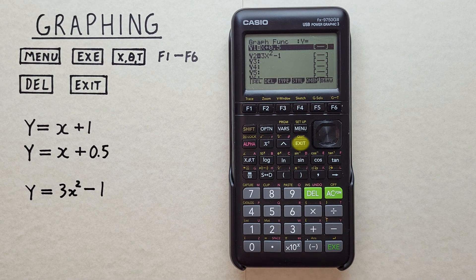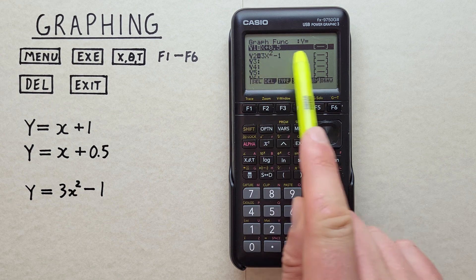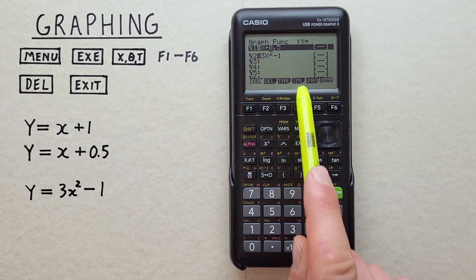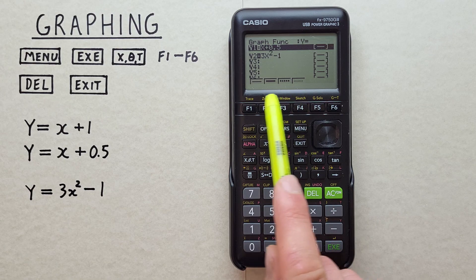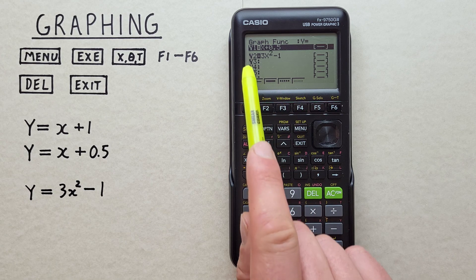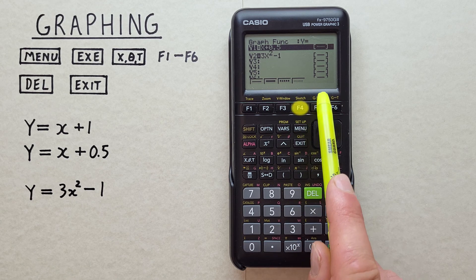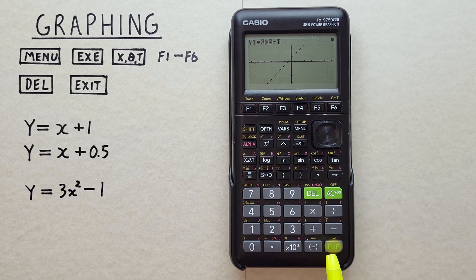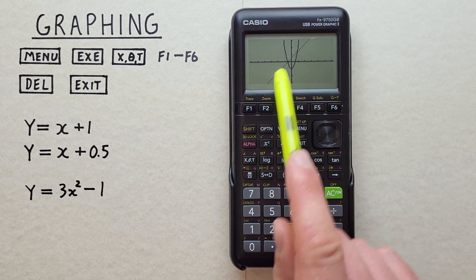We can also change how a function is displayed. For example, let's say we wanted to differentiate between the two. Let's say we wanted Y1 to look visually different. We can do that by choosing the F4 style key here. And we see four different style or visibility options here. So let's change our Y1 to this dotted line here under F4. You can see here on the right hand side, it shows what it'll display as. So if we hit EXE, now our line is dotted, easily differentiating the two.